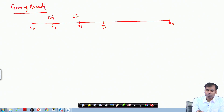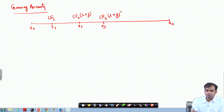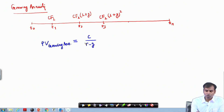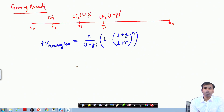In year 1 you receive CF1; in year 2 you receive CF1 multiplied by 1 plus G, which is your growth rate; in year 3, CF1 multiplied by 1 plus G squared, and so on. The formula for the present value of growing annuity is C by R minus G multiplied by 1 minus 1 plus G divided by 1 plus R to the power N. This gives the present value of growing annuity where annual cash flows are increasing.